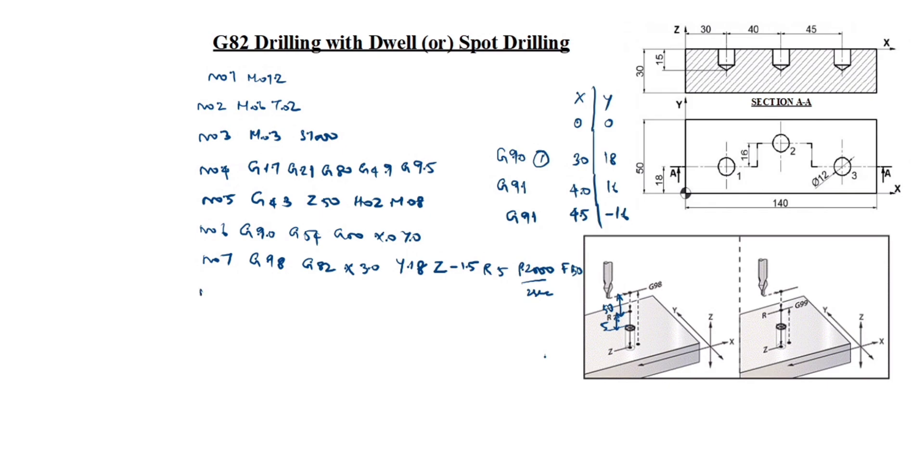Next N08. Up to here finished, first hole finished. Second hole is G91 code. So we will write G91 here. G91 X40 Y16. Second hole, we will use G91, right? So we will write G91, otherwise it will take G90. That's why we will give G91 code here.